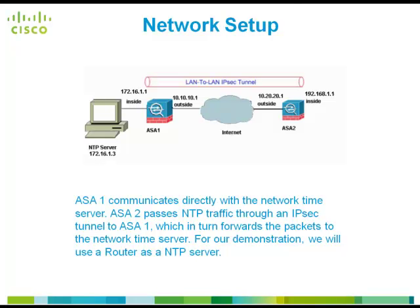We will be using the following network setup in this video. A LAN-to-LAN IPsec tunnel is created between ASA1 and ASA2. ASA1 communicates directly with the network time server. ASA2 passes the NTP traffic through an IPsec tunnel to ASA1, which in turn forwards the packets to the network time server. For our demonstration, we will use a router as an NTP server.